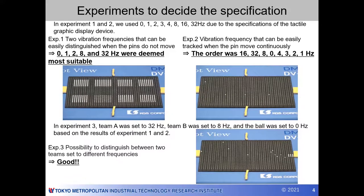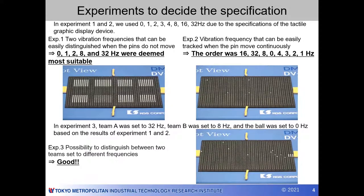The second experiment was to identify the frequency at which it was easy to distinguish when the pin moved continuously. The same frequencies as in experiment one were used. As results, the order of ease of tracking was 16, 32, 8, 0, 4, 3, 2, and 1 hertz.